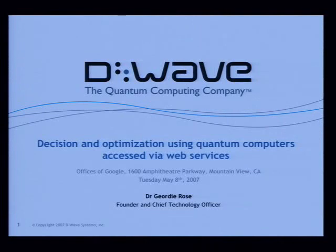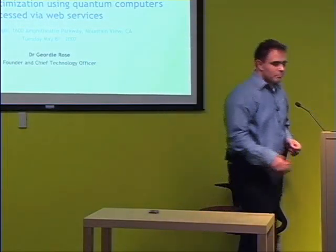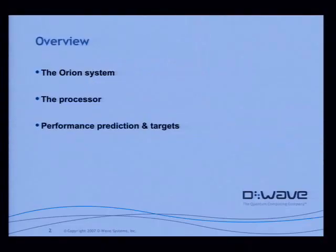I'd like to thank Dennis Grupenikoff for setting all of this up. This talk is going to have three parts. The first is a description of what the system is and what it does — more on the side of what the user sees, so when you access the system, what do you see and what can you expect it to do. Then I'm going to talk about the processor itself, which is the heart of the system, and explain how it works. And then I'm going to talk about what we might expect for performance.